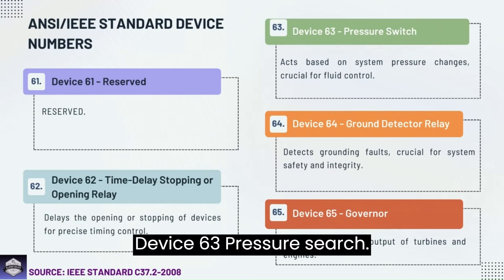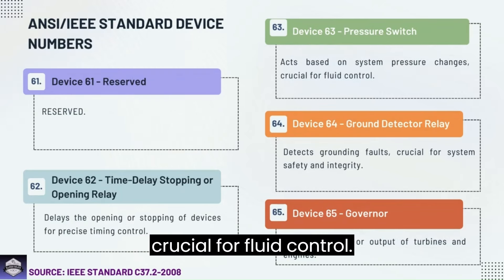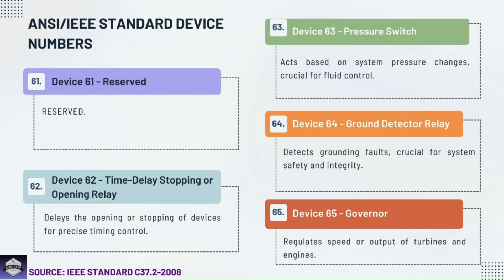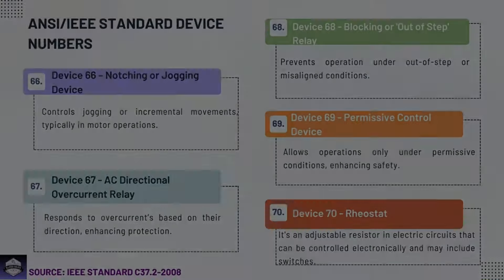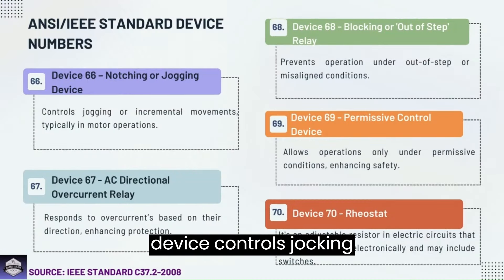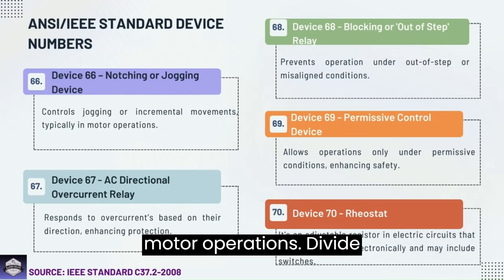Device 63: Pressure switch — acts based on system pressure changes, crucial for fluid control. Device 64: Ground detector relay — detects grounding faults, crucial for system safety and integrity. Device 65: Governor — regulates speed or output of turbines and engines. Device 66: Notching or jogging device — controls jogging or incremental movements, typically in motor operations.